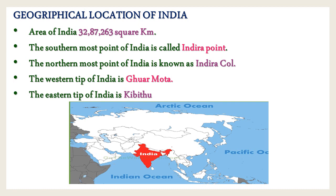The area of India is 32,87,263 square kilometers. The southernmost point of India is called Indira Point. The northernmost point of India is known as Indira Col. The western tip of India is Ghar Mota. The eastern tip of India is called Kibitu.